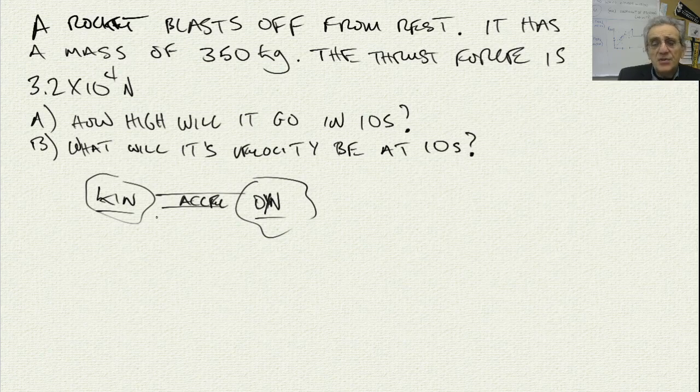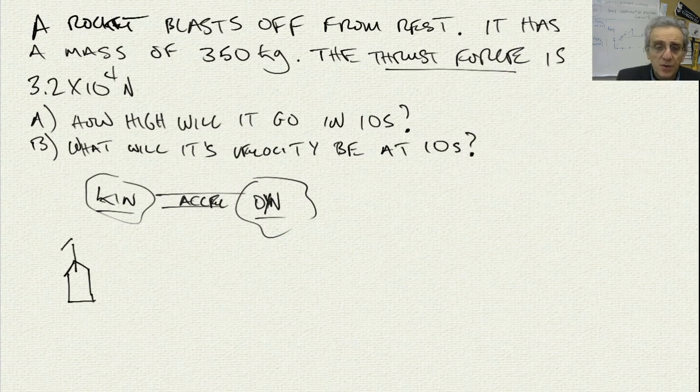So we're going to have to do the dynamics part first, and I'll draw the free body diagram here. Here's the rocket, and what are the forces on the rocket? One of them is the given thrust force. That thrust force is going to be up, and of course there's also gravity on the rocket.